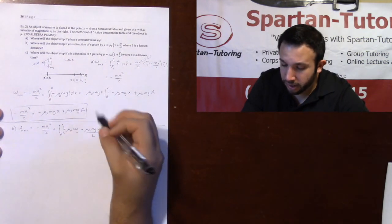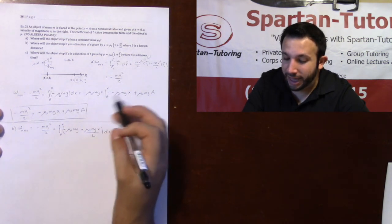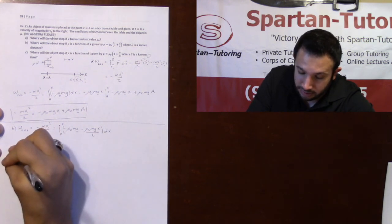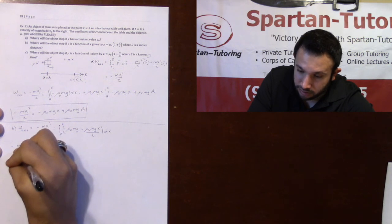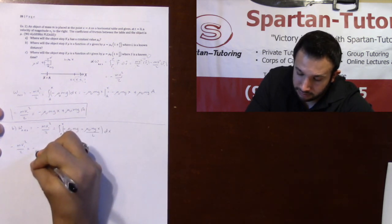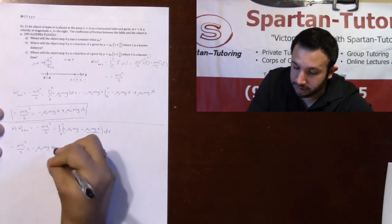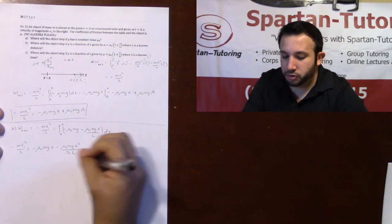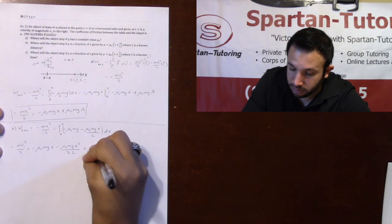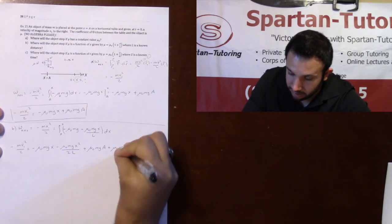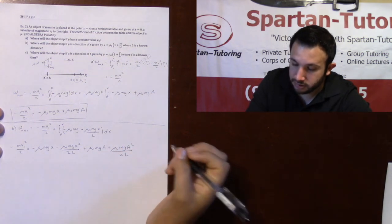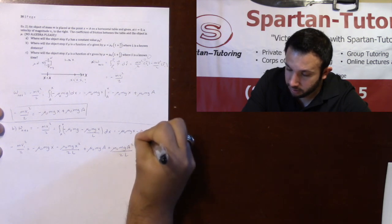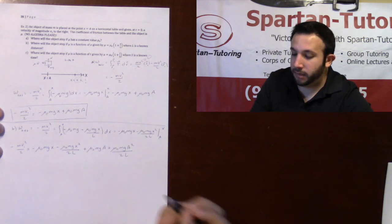I'll integrate and plug in x minus plug in a. Notice that when I plug in a that will turn into a positive because minus negative is positive. So the final answer is: negative mv1² over 2 equals negative mu naught·mg·x minus mu naught·mg·x² over 2L, and then plugging in a those terms all turn into pluses: plus mu naught·mg·a plus mu naught·mg·a² over 2L. That's integrating negative mu naught·mg·x minus mu naught·mg·x² over 2L from a to x — plug in the top minus plug in the bottom.